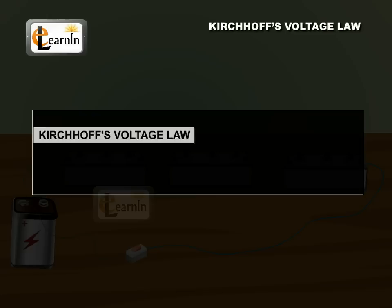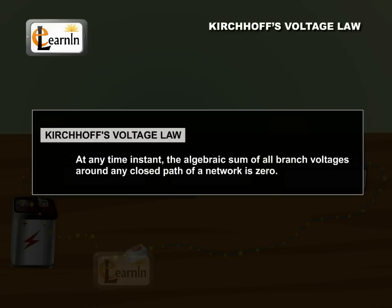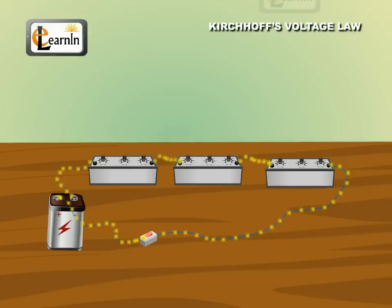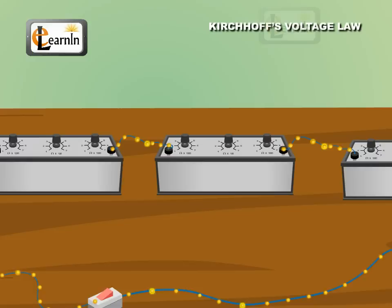Kirchhoff's Voltage Law states that, at any time instant, the algebraic sum of all branch voltages around any closed path of a network is zero. To clarify the terminology, a branch voltage is simply the voltage across a cell, resistor, or any other component in a network.